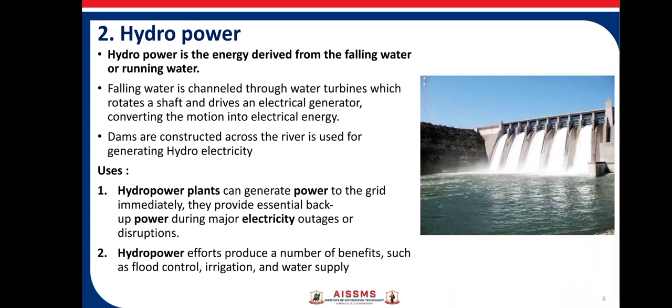Next is hydropower. Hydropower energy is the energy derived from falling or flowing water. The flowing water is channeled through a water turbine and used to rotate shafts and drive an electrical generator which converts the motion into electrical energy. Dams are constructed across rivers and used for generating hydroelectricity.